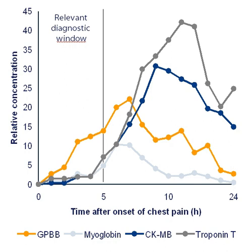In cell biology, a biomarker is a molecule that allows the detection and isolation of a particular cell type. For example, the protein Oct4 is used as a biomarker to identify embryonic stem cells. In genetics, a biomarker identified as a genetic marker is a DNA sequence that causes disease or is associated with susceptibility to disease. They can be used to create genetic maps of whatever organism is being studied.